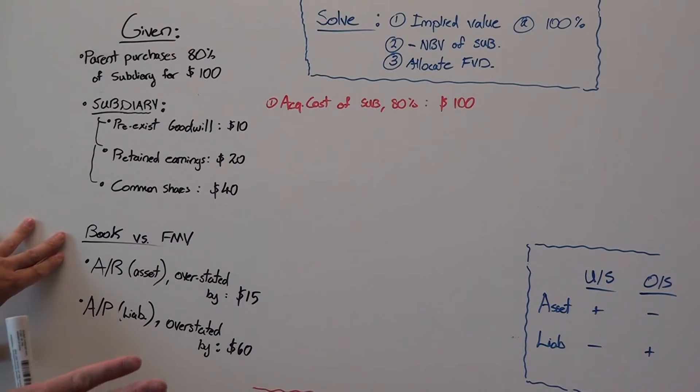And then book value versus fair market value, its accounts receivable was overstated by $15, and accounts payable was overstated by $60.